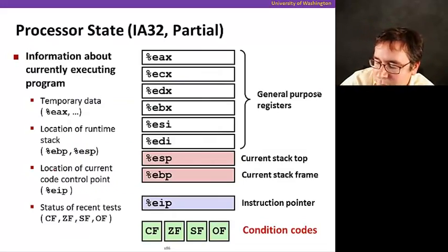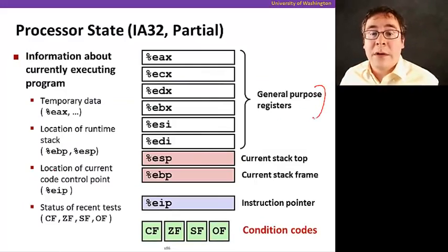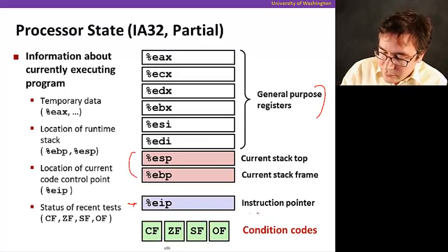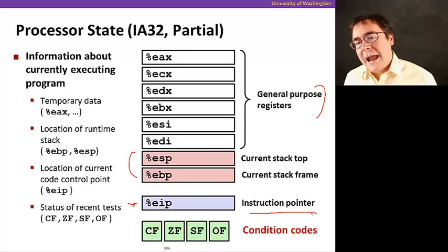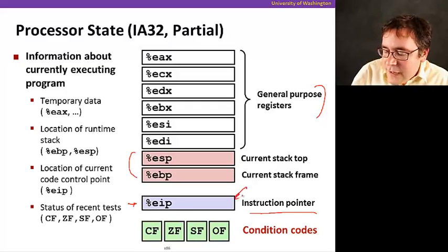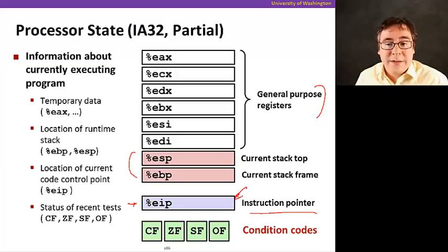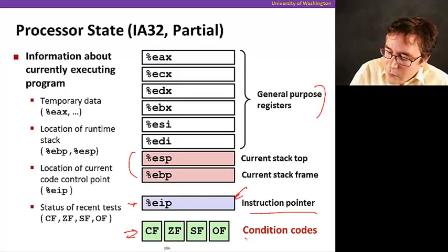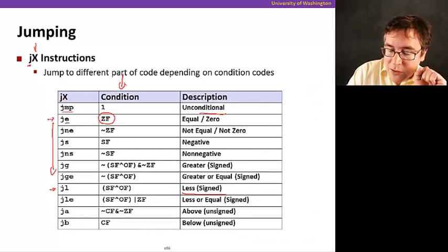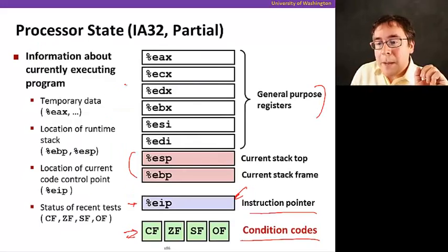Let's look at the processor state again. Remember that we have the registers we've been playing with already. The stack pointer and base pointer are special. The instruction pointer tells what is going to be executed next. When you execute a branch instruction, you're actually going to change the value of the instruction pointer. Finally, we have these four single-bit registers called condition codes that are set by some instructions. We're going to use these to implement conditional branches.